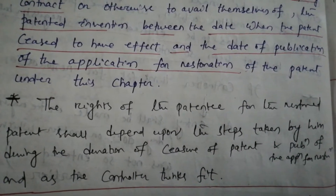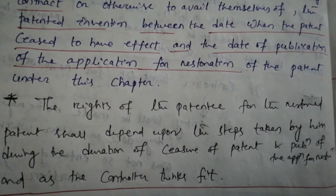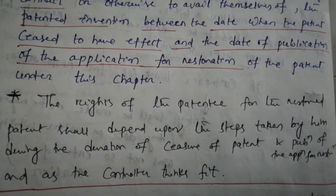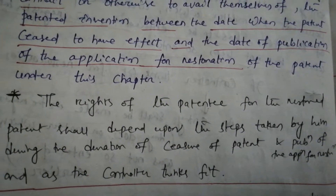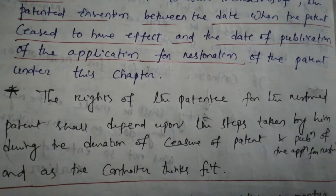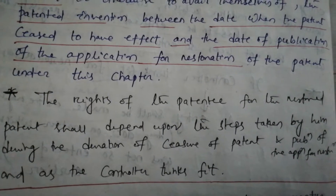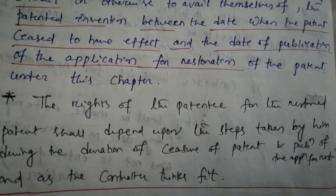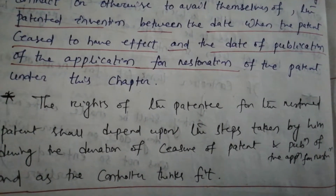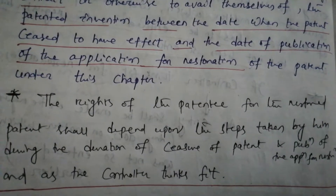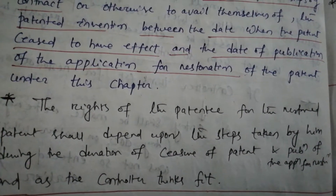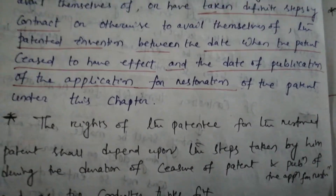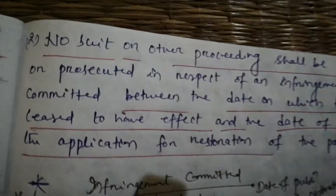Between that time duration, if the patentee takes the right steps, this may go in his favor. The other thing is what the controller thinks fit. So two things matter: one is the steps taken by the patentee during that duration, and second is whatever the controller thinks fit. These are the provisions.